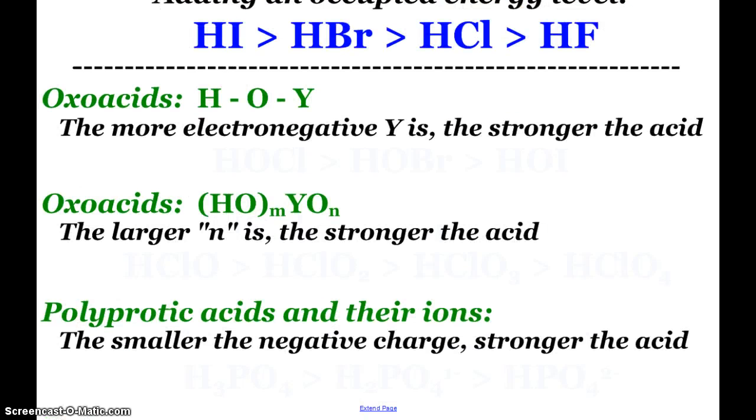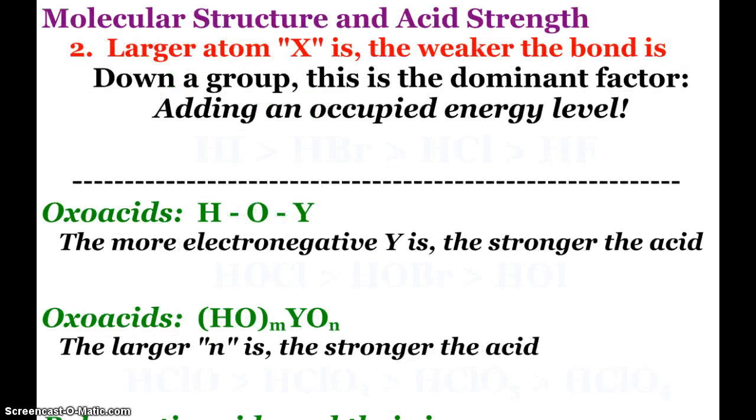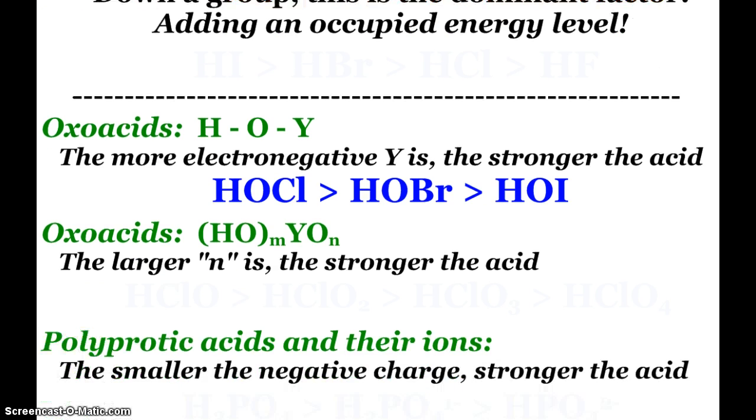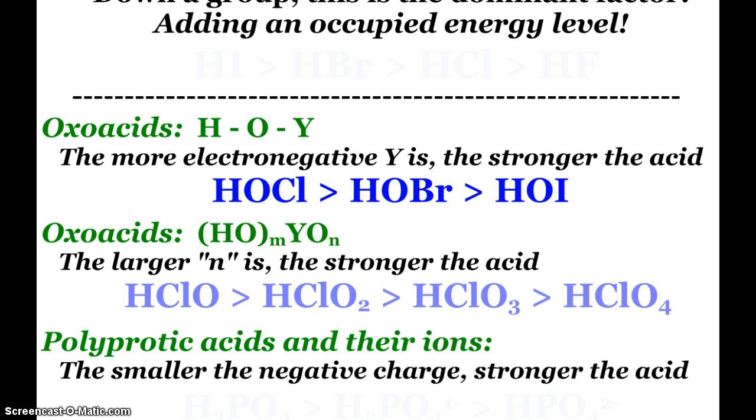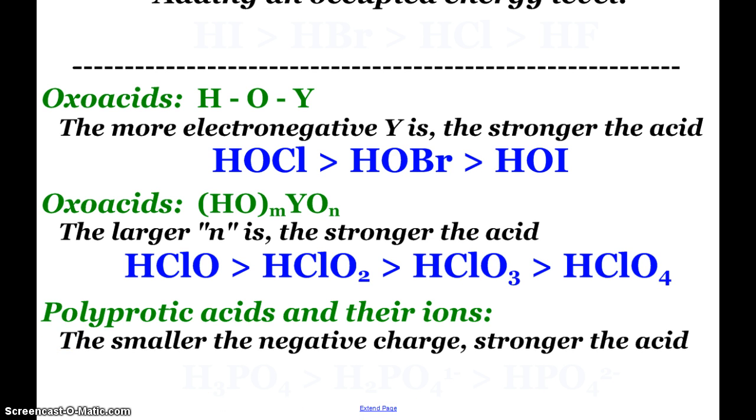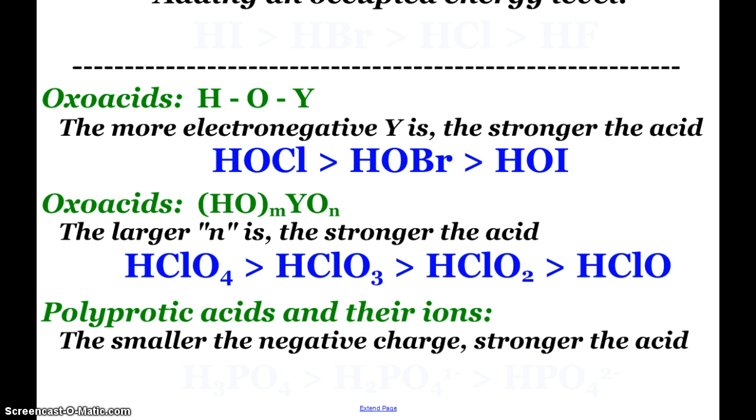Then we have a couple other small situations to just take a note of. These things called oxoacids. Hydrogen is attached to an oxygen attached to another element. And the more electronegative that other element is, the stronger the acid. So here we see HOCl stronger than HOBr, stronger than HOI because of their electronegativities. Other oxoacids, the more oxygens you have, the stronger the acid. So here we see perchloric acid is stronger than chloric acid, stronger than chlorous acid, stronger than hypochlorous.